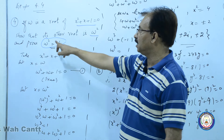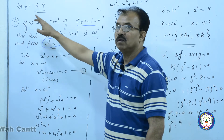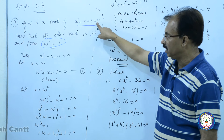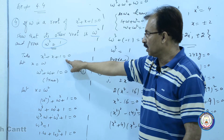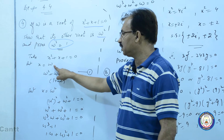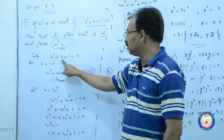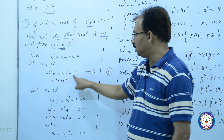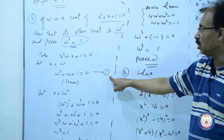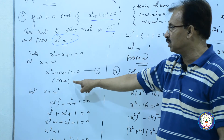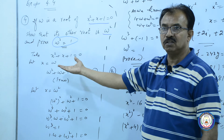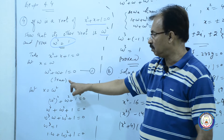سب سے پہلے جو omega root تھا، جو اس نے کہا ہے کہ یہ اس کا root ہے، یہ میں نے اس equation میں put کر دیا۔ اس میں x کی جگہ میں نے omega place کیا تو omega square plus omega plus one is equal to zero۔ یہ statement true بن گئی، اس کو equation one میں نے consider کیا۔ اور یہ true اس لحاظ سے ہے کہ one plus omega plus omega square is equal to zero۔